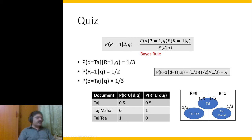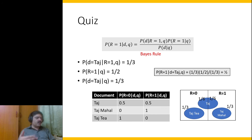Working through the calculation: 1/6 over (1/6 + 1/3) = 1/6 over (1/6 + 2/6) = 1/6 over 3/6, which gives us 1/3.